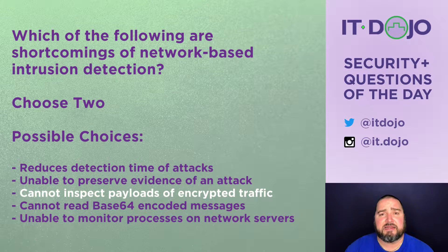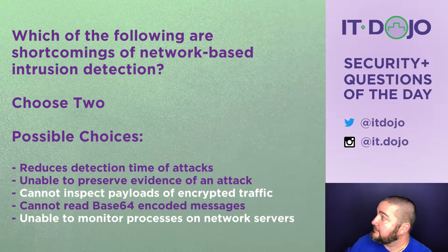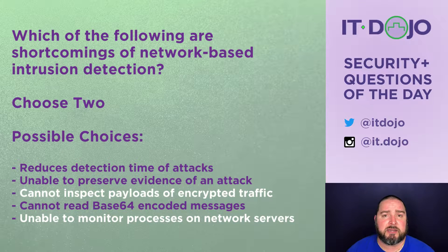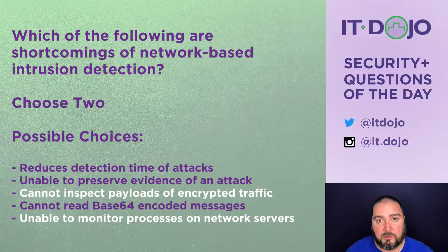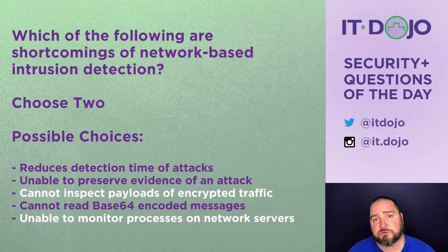The next option says an IDS can't read Base64-encoded messages — no, that's not true, they can handle that. The final option states that a network-based IDS is not able to monitor services or processes on an actual server — and that's true. A network-based IDS only sees what's happening on the network; things occurring on a node, server, or user's computer — such as running processes, privilege changes, or file modifications — the network IDS can't see any of that. That's the domain of host-based intrusion detection.